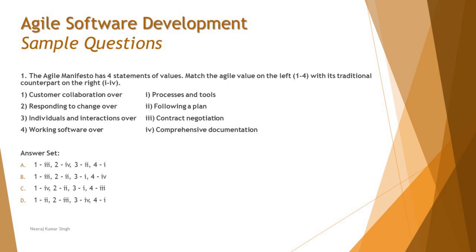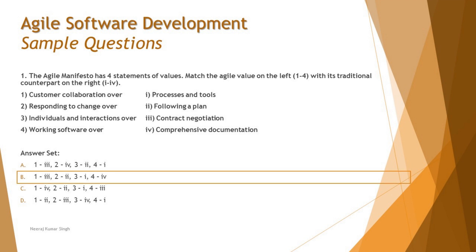The third value is 'individuals and interactions over processes and tools' — people and their interactions are given more importance than the processes and tools followed. Fourth is 'working software over comprehensive documentation' — working software is the primary measure of progress in Agile. The correct answer is B: one maps to three, two maps to two, three maps to one, and four maps to four.